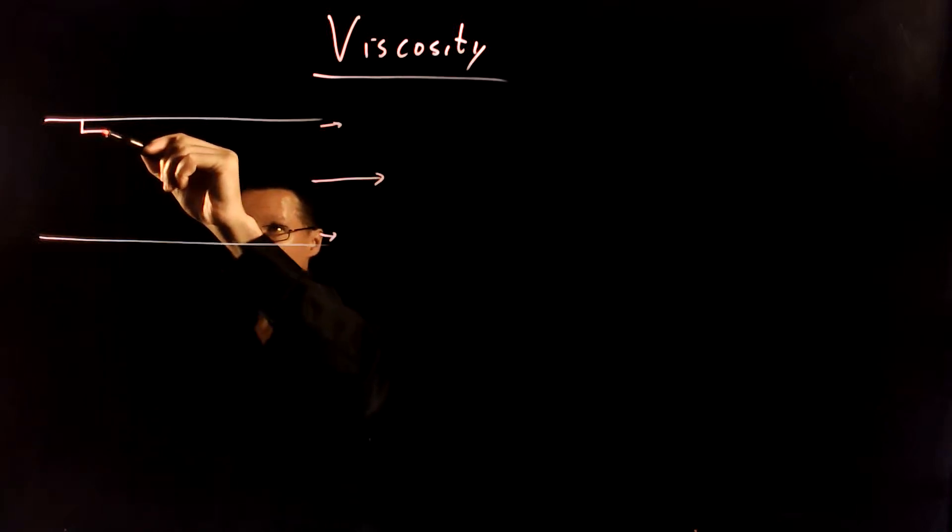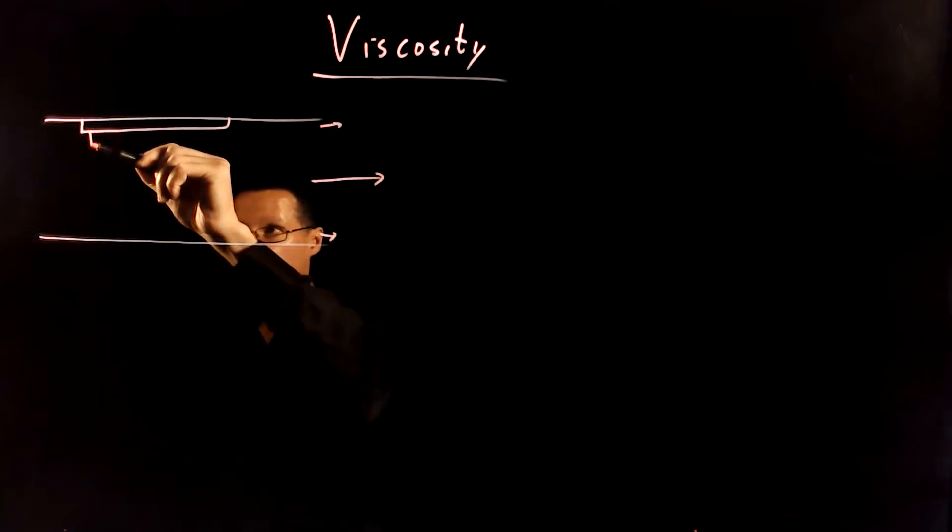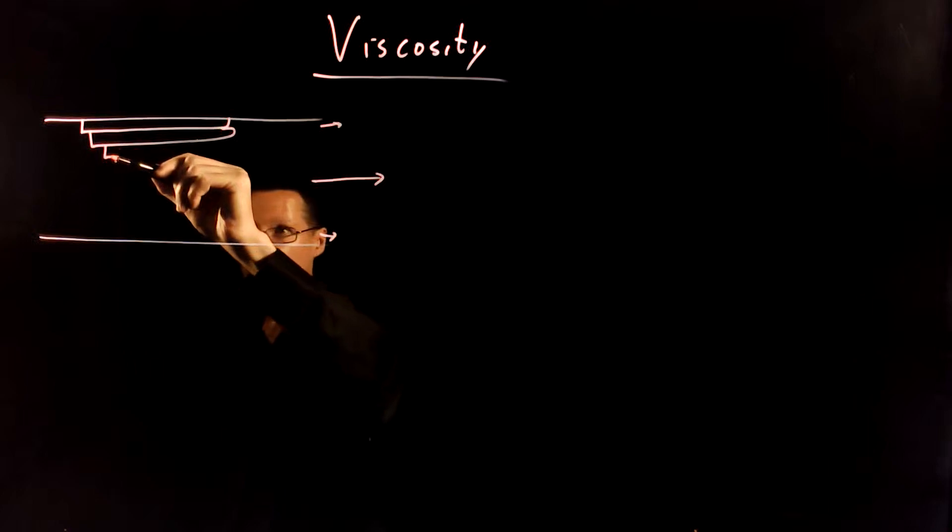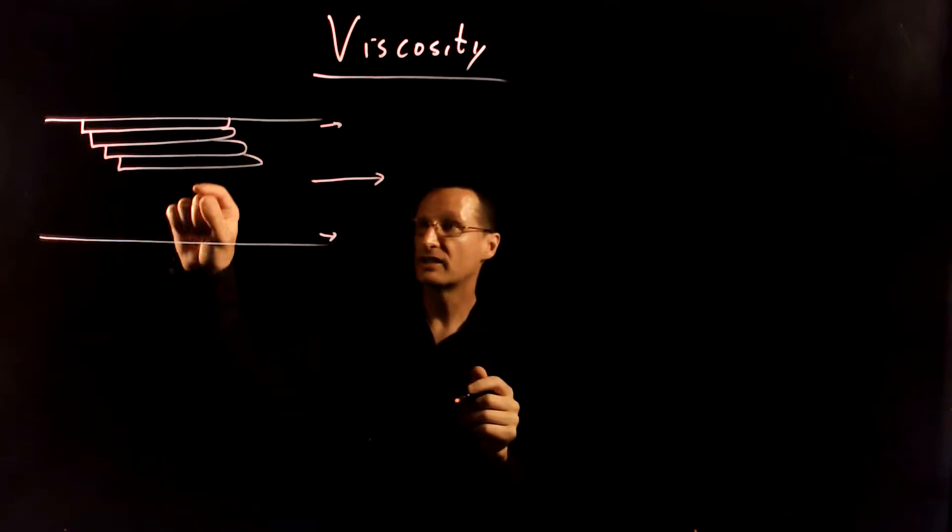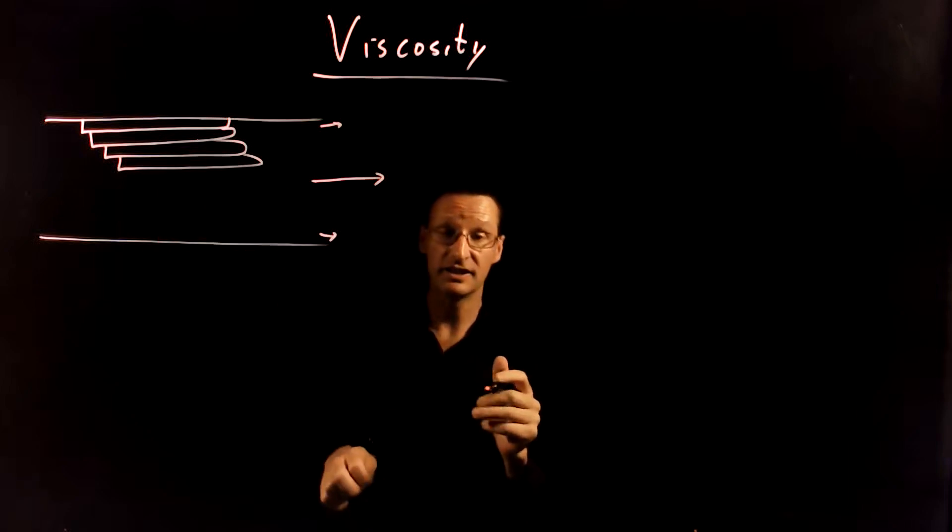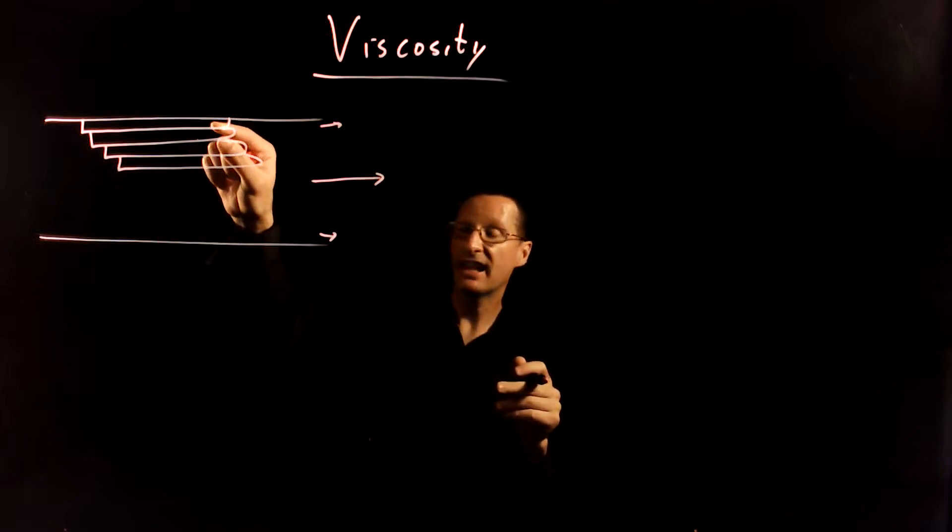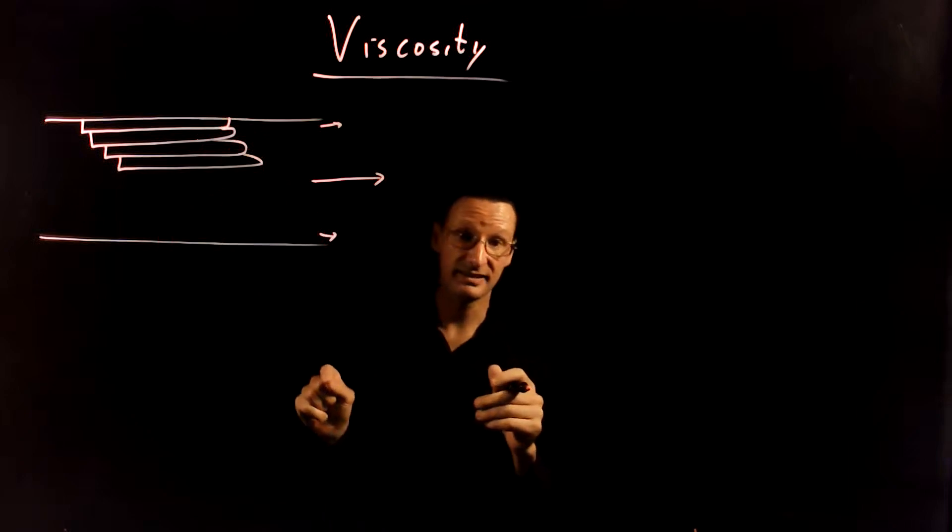The way we think about this is we separate the fluid into layers and imagine those layers sliding past each other. Those layers exert frictional forces on each other that cause the velocity at the edge to be much lower than the velocity at the center.